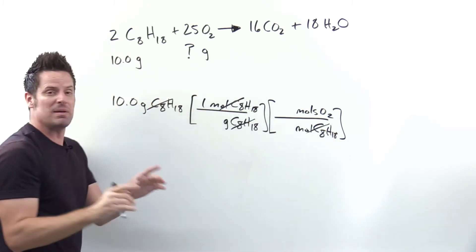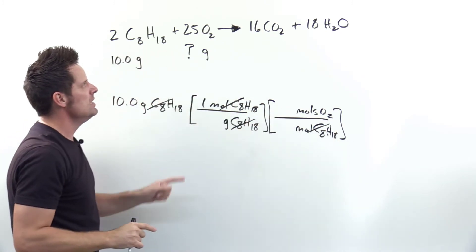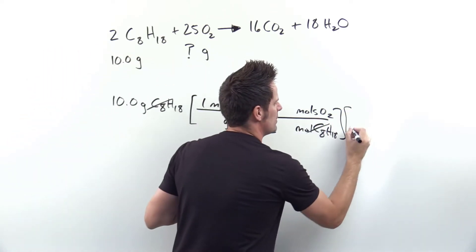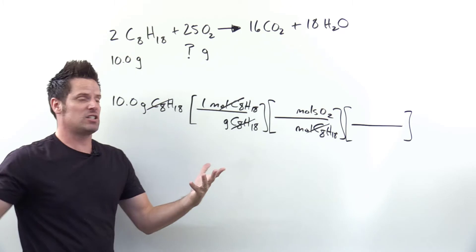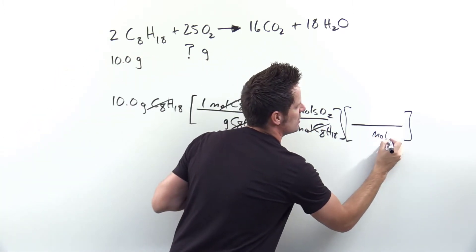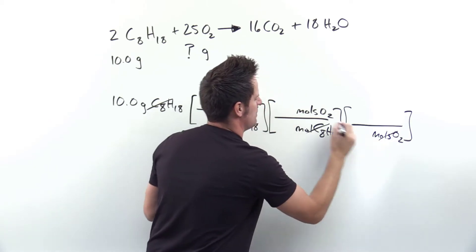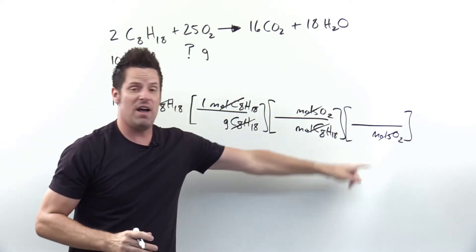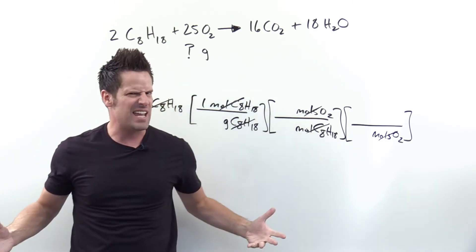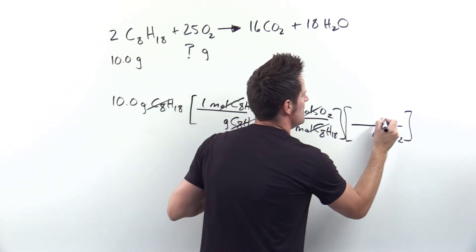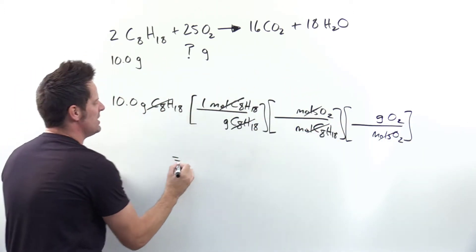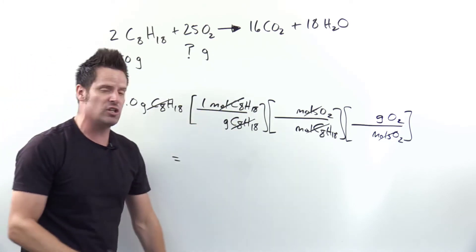I'm now at moles of O2, but the question asks for grams of O2, so I lay down another set of parentheses. I put moles of O2 in the denominator to cancel, and ask: can moles of O2 and grams of O2 touch? Absolutely yes — moles and grams of the same substance can touch. So I put grams of O2 in the numerator. Now I have everything set up all the way to grams of O2 — my target units.